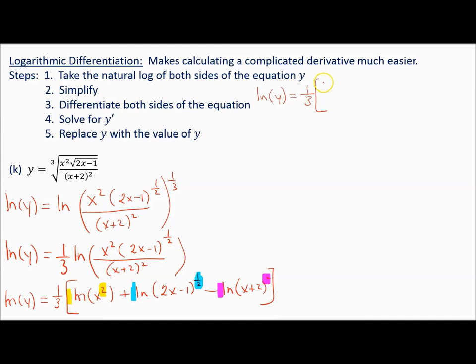Natural log of y equals 1 third times bracket: 2 natural log of x plus 1 half natural log of 2x minus 1, minus 2 natural log of x plus 2. That is completely expanded. Make sure you're comfortable with that — pause if you have to and work through it.